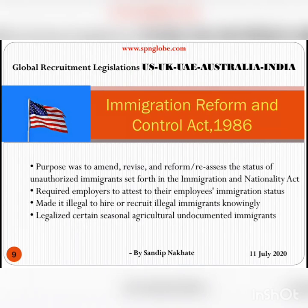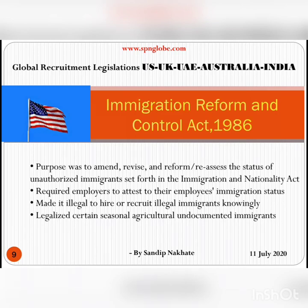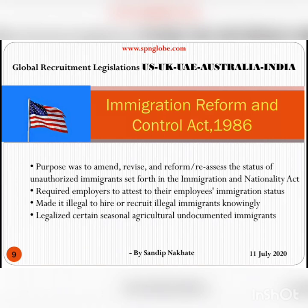The Immigration Reform and Control Act of 1986 was designed to amend, revise, and reform the status of unauthorized immigrants as set forth in the Immigration and Nationality Act. It required employers to attest to their employees' immigration status and made it illegal to knowingly hire or recruit illegal immigrants. It did, however, legalize certain seasonal agricultural undocumented immigrants.